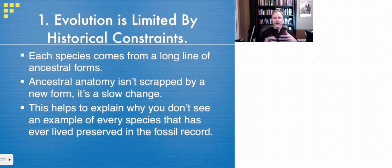So the first one here, evolution is limited by historical constraints. Each species you have to keep in mind comes from a long line of descent, a large number of ancestral forms. And this ancestral anatomy isn't scrapped all at once for a new form. You have a slow, gradual type of change many times, especially with animals. And this explains why you don't see a particular example of every single species that ever lives. Because sometimes these changes are so small, so minute that you don't really notice them, along with the idea that fossilization is very, very rare.